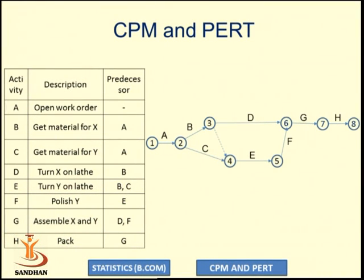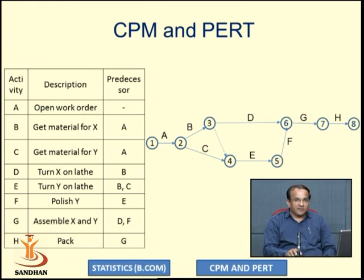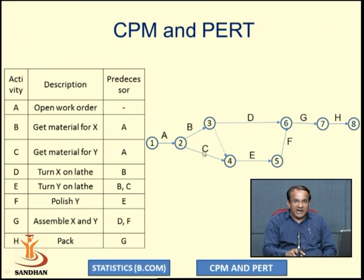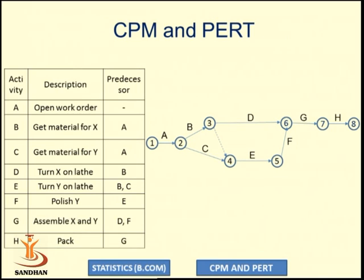Activity A is the first activity with no predecessor, while A is a predecessor for activities B and C. So B and C start after A is completed, while B is the predecessor for D. B and C are predecessors for E, so B and C must be completed before starting E. We use a dummy activity because we cannot join activity B directly from node 2 to node 4, as that would create a parallel activity, which should not occur in a network diagram. The dummy is used to satisfy the logical precedence relationship.